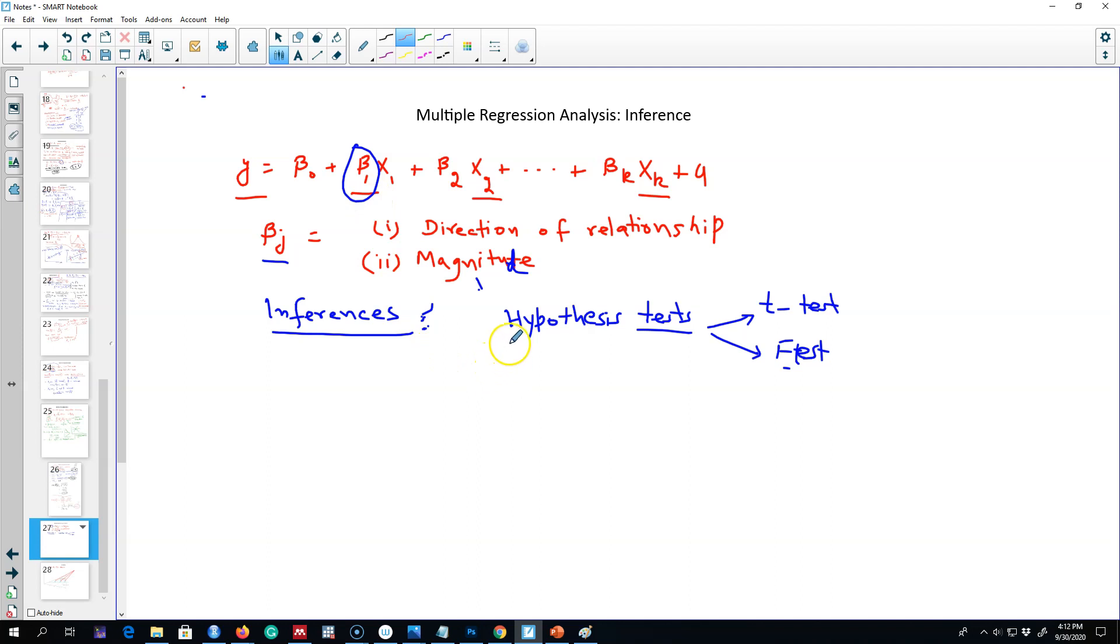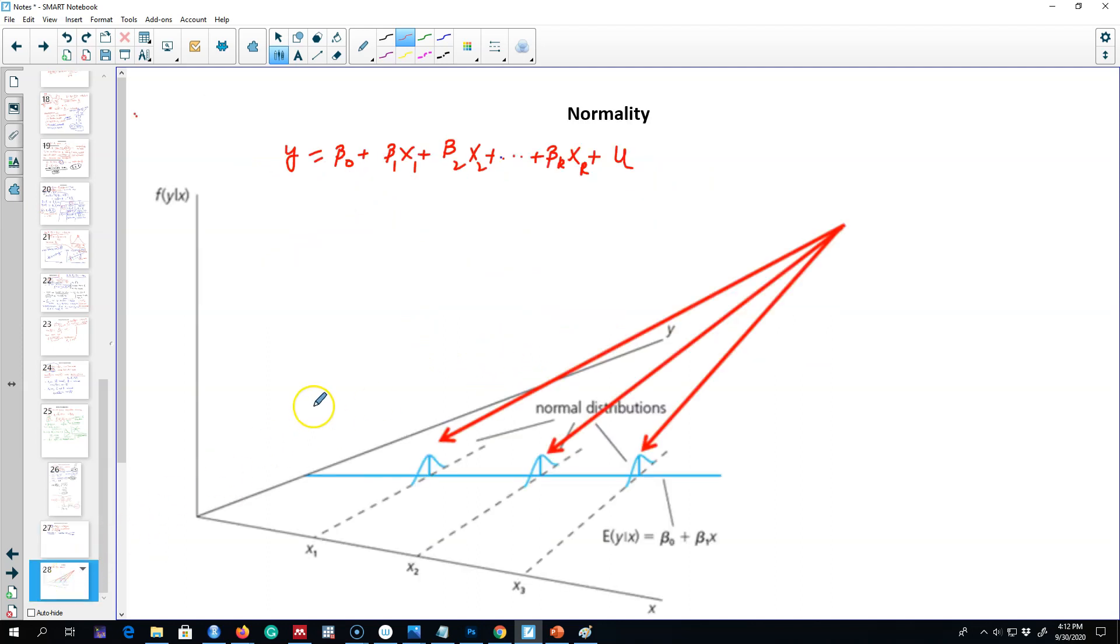In particular, I'm going to talk about hypothesis testing. To do that, I'm going to introduce a new assumption that we have not seen so far. This assumption is about the error term, so we're going to talk about the assumption of normality.